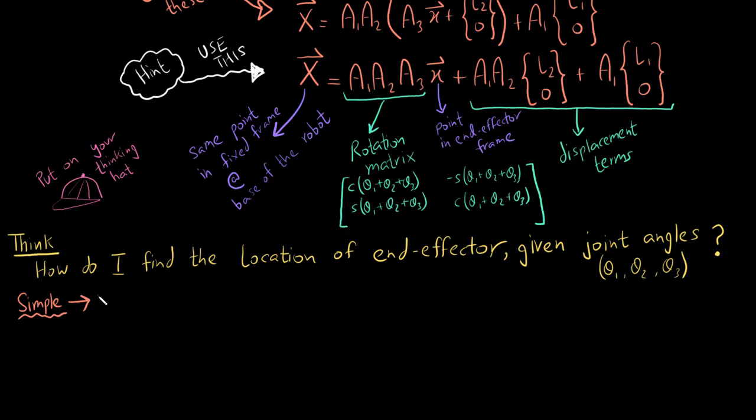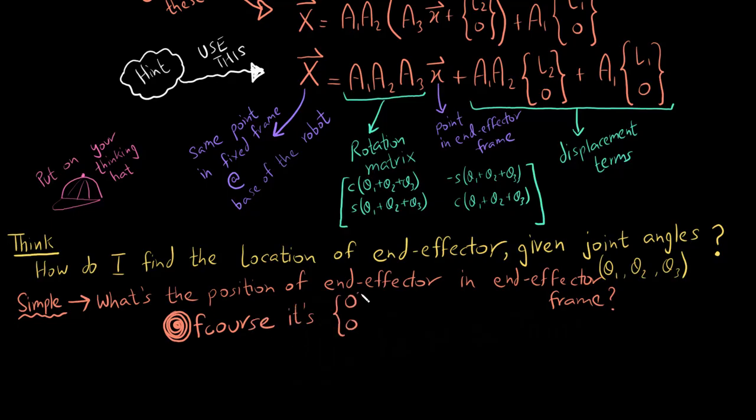So the question is, what's the position of the end effector in the end effector frame? Of course, it's the origin. So it's 0 in x and 0 in y.